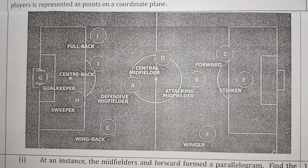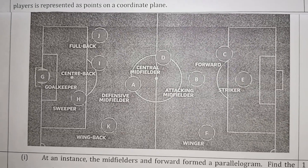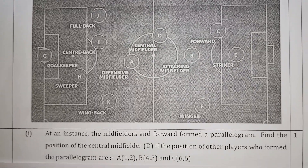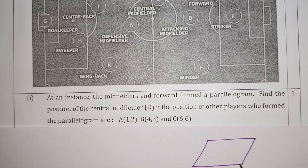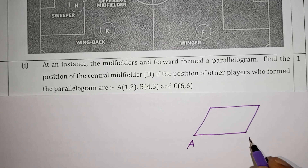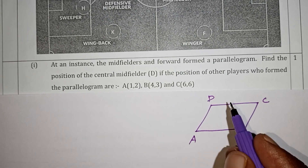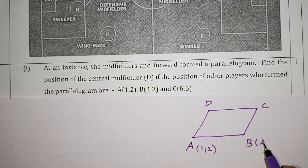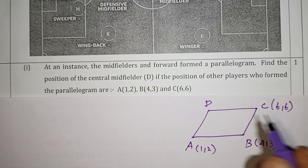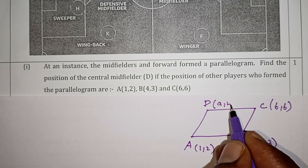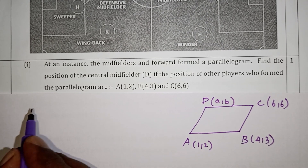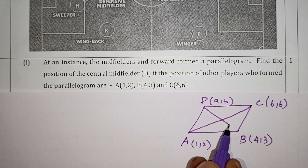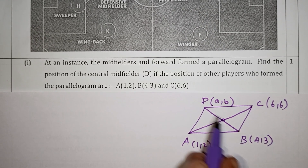Basically, in a parallelogram, if we use the midpoint formula, we can solve this. The property is: in a parallelogram, diagonals bisect each other. So the midpoint of diagonal AC equals the midpoint of diagonal BD. A point is (1,2), B point is (4,3), C point is (6,6), and D is unknown.